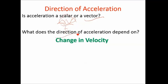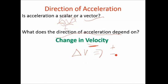The direction of acceleration will depend on how the velocity changes. If you do the math, the delta V — if that delta V is positive, you're accelerating in the positive direction. If that delta V is negative, you're accelerating in the negative direction. This is not where you're traveling — it's not the velocity itself. It's the change in velocity, whether it changes positively or negatively.